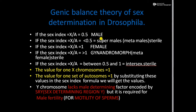Super males or meta males are sterile and do not reproduce. If the sex index value is equal to 1, then the sex of the individual is female, and this is a fertile individual. If the sex index is greater than 1 — for example, up to 1.5 — the sex of the individual is a meta female or gynandro morph.